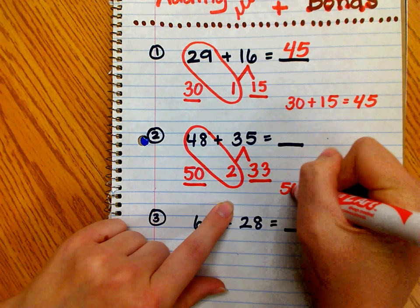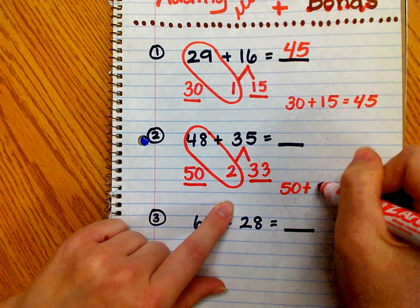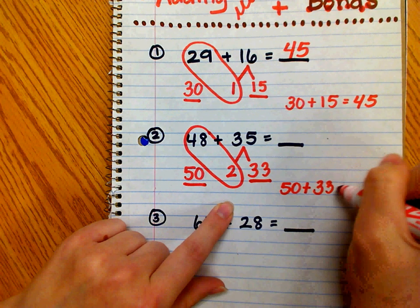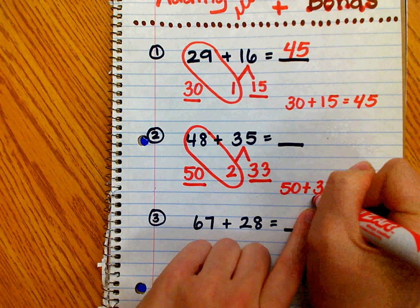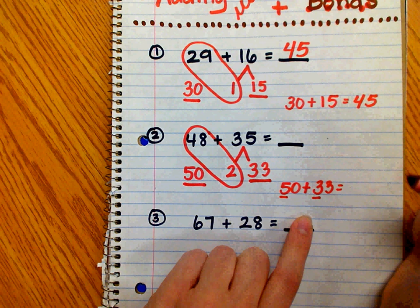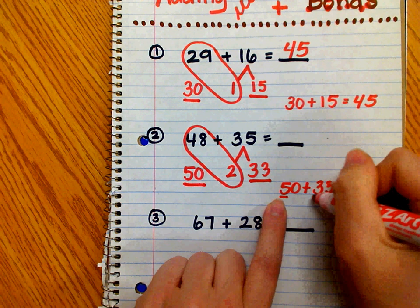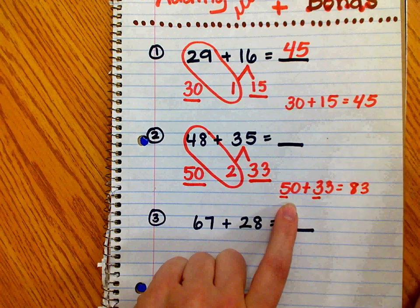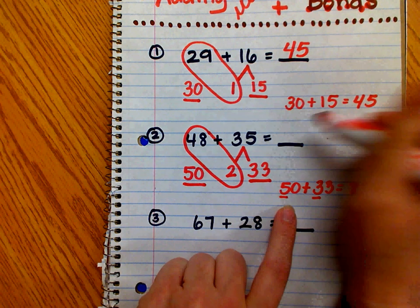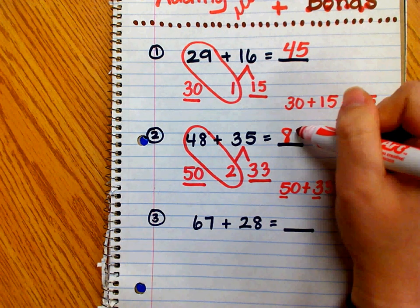So now we have two easier numbers to add mentally, 50 plus 33. And our students can use their knowledge of place value to know that 33 has 3 tens. And if you add 5 tens, 3 tens plus 5 tens is equal to 8 tens, and then the 3 ones. So 48 plus 35 equals 83.